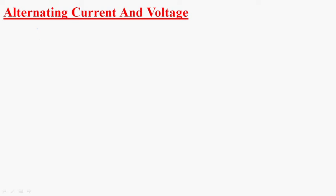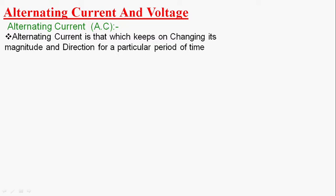Hi guys, now you are going to learn about alternating current and voltage. Alternating current is that which keeps on changing its magnitude and direction for a particular period of time. That is called alternating current.